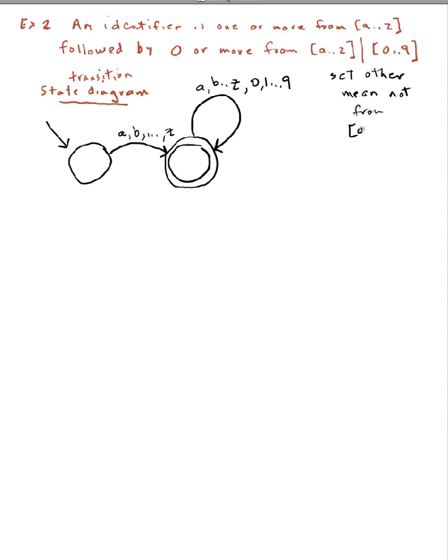...not from a to z and not from zero to nine, so any other character. So let's take a look and see what happens if we have one of these other characters coming in. If I start in the initial state and the character that's coming in is from zero to nine, then I do not have an identifier.